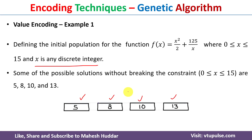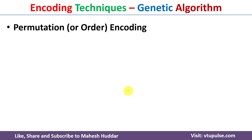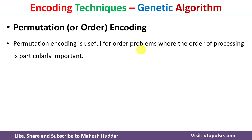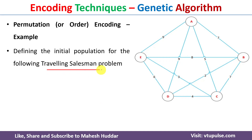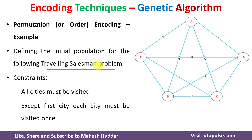The third encoding technique is known as permutation or order encoding. Permutation encoding is useful for order problems where the order of processing is particularly important. Let's take an example using the Traveling Salesman Problem. We have been given five cities. The constraint is that the salesman has to visit each and every city once and has to start from a particular city and return to the same city.